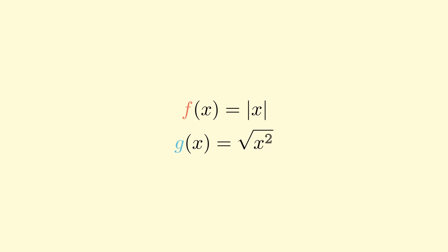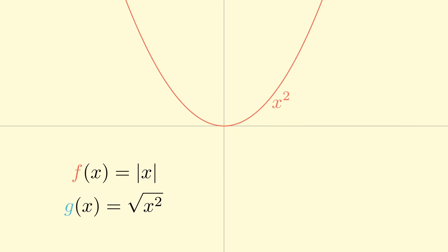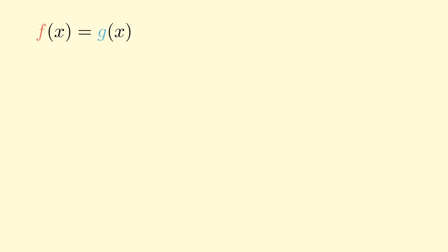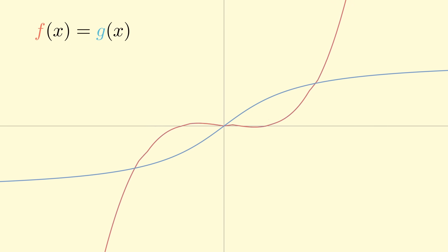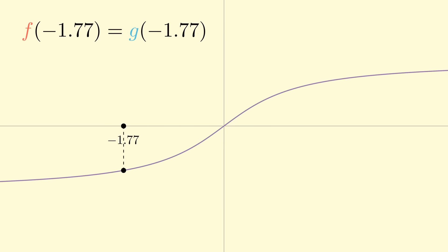But first, what does it even mean for two functions to be equal? Take a look at the two functions: absolute value of x and square root of x squared. Although these are defined differently, they are actually the same function. Here's a graph of the square root of x squared — it looks awfully similar to the graph of absolute value of x. This is because for every input, these functions give the same output. We say two functions are equal at a point if that point gives the same output for both functions. Visually, this means their graphs intersect at that point. For functions to be equal everywhere, they need to give the same graph.